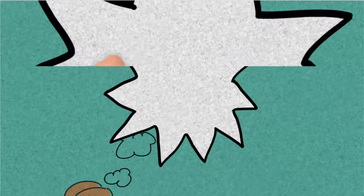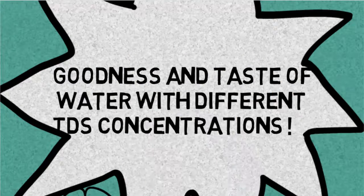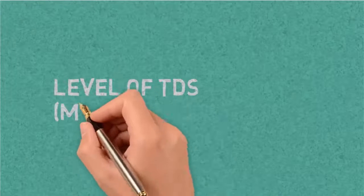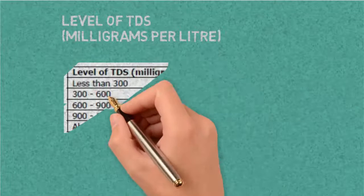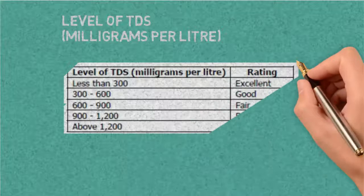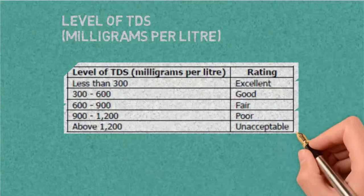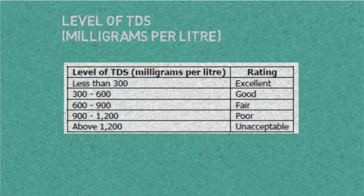Goodness and taste of water with different TDS concentrations: Less than 300 mg per liter is excellent, 300 to 600 is good, 600 to 900 is fair, 900 to 1200 poor, and above 1200 unacceptable.